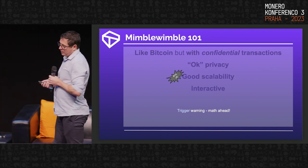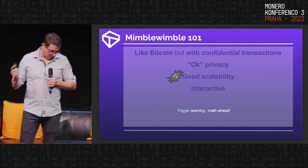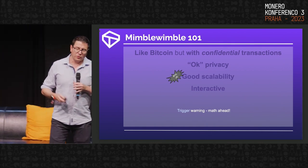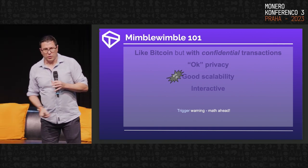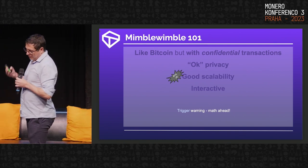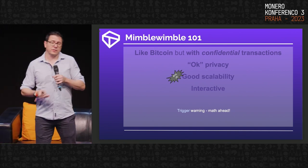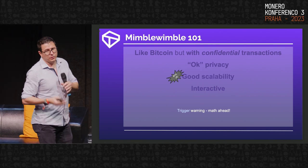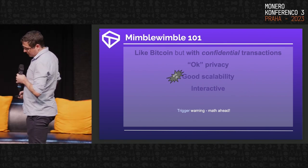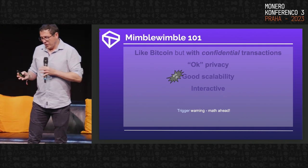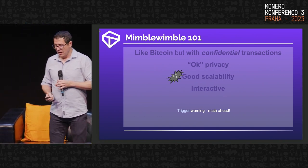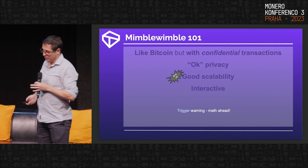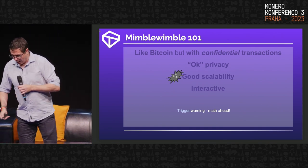What Mimblewimble does do well is scalability. The security trade-off is that once you've spent a transaction, you can just throw it away. To validate the state of the chain, all you really need is the set of unspent outputs — all the coins in circulation — plus the emission curve, and you can do a trustless verification of the chain state. If Bitcoin had been done this way, you could probably throw away 80% of the blockchain. But it's also interactive.